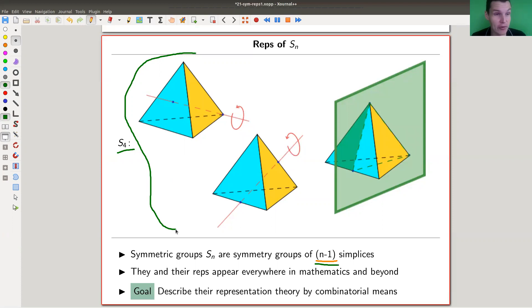So Frobenius basically already worked that out, as I said, 120 years ago. But we as viewers, and also the speaker of these videos, we don't understand them very well. So we might want to look for some combinatorial description, preferably of the representation theory.